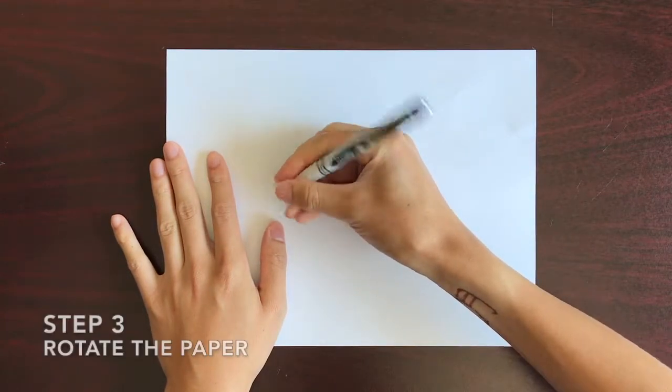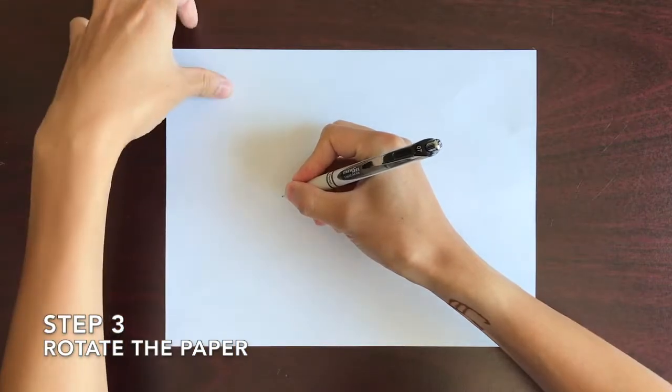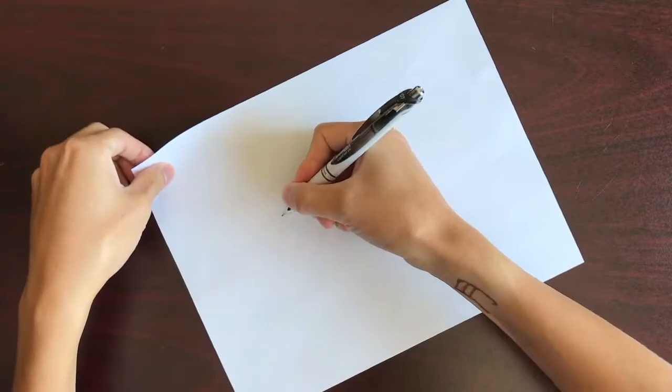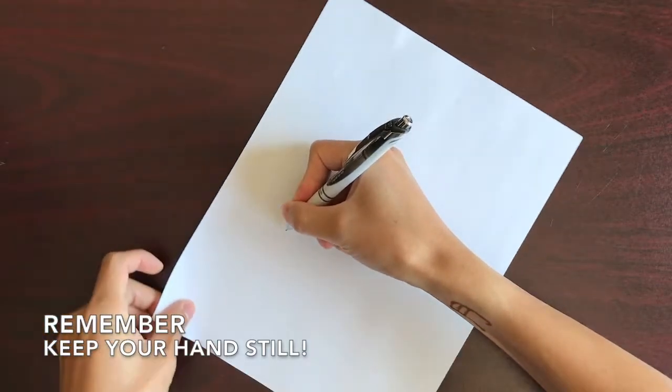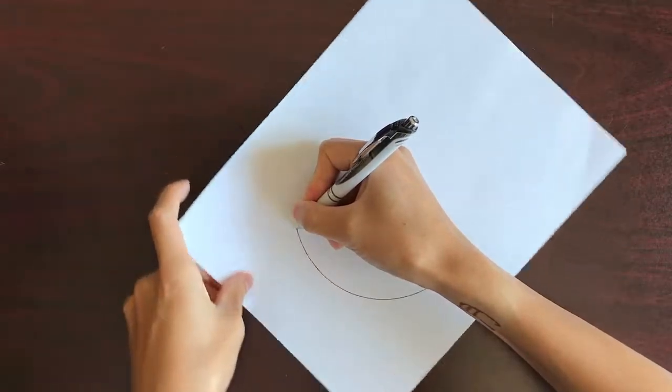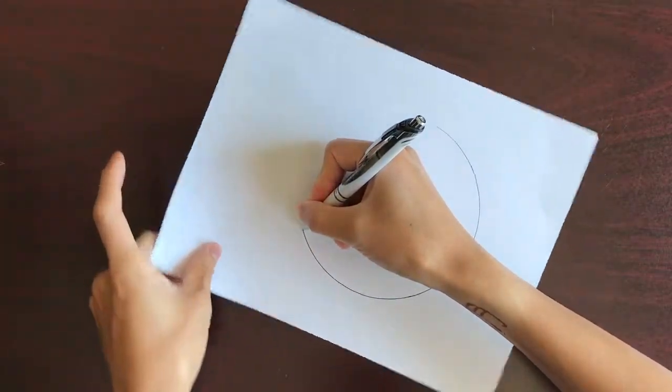With your other hand, begin rotating the paper around the anchor point of your knuckle. Remember to keep your pen at a constant distance from the center of the circle. This will result in a perfect circle.